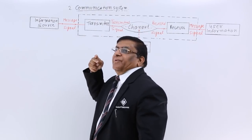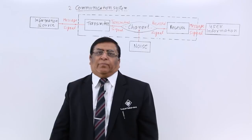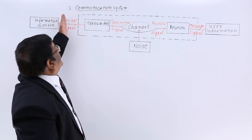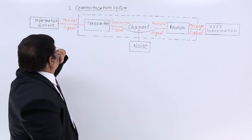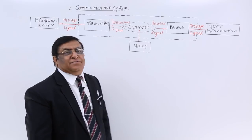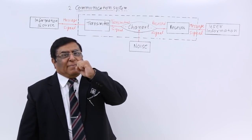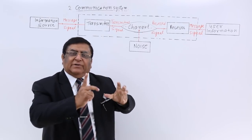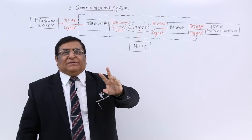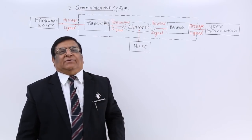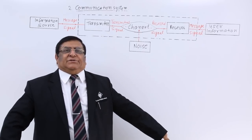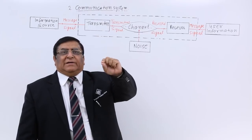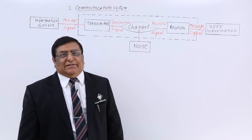What comes out from the information source is the message signal. Now, in the communication system the first thing we have is the transmitter. The microphone has made a voltage — my sound is converted to electrical voltage. Such machines which convert one form of energy to another are known as transducers. So a transducer, like a microphone, converts my sound into electrical current variations, i.e., signals.